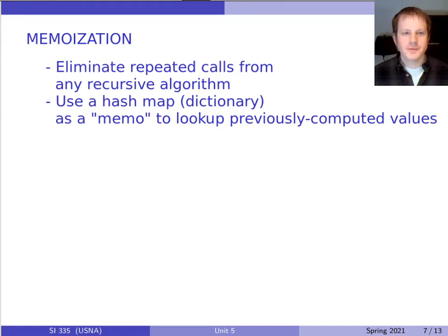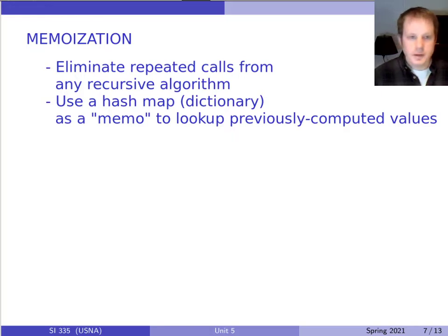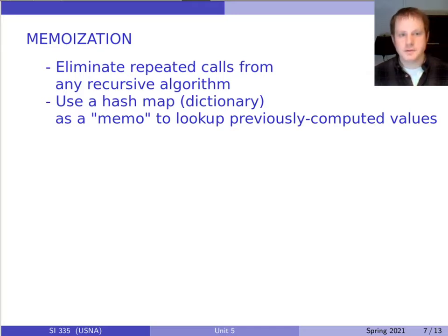Hi everybody, welcome to the next video. As a review, what we've learned about so far is this cool technique called memoization. Any recursive algorithm that we have, we can use this idea of memoization, which is just saving the previous values in a hash map, like a dictionary in Python, in order to avoid having to recompute the same thing over and over again.